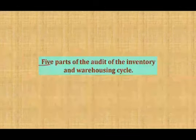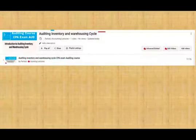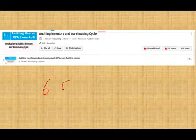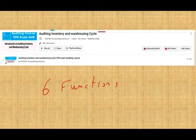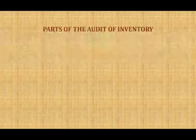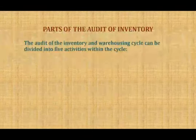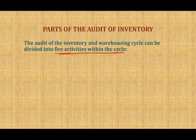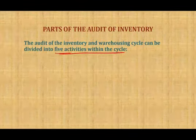Make sure to review what we looked at in the prior session, where we covered the introduction of the inventory and warehousing cycle and the six functions within it. There are six functions in the inventory and warehousing cycle, but we have five parts of the audit. So the audit of the inventory and warehousing cycle is divided into five activities. What are those five activities and how do we audit them?